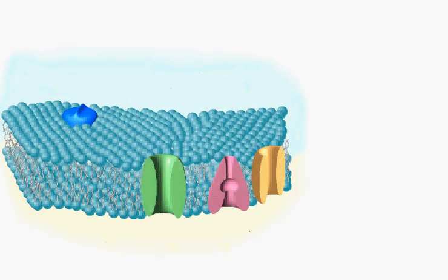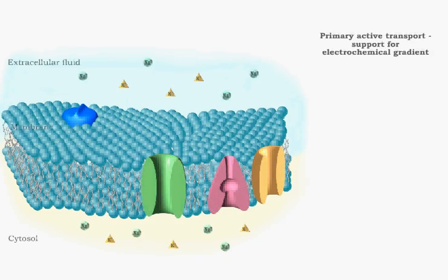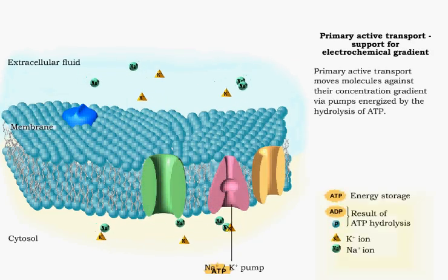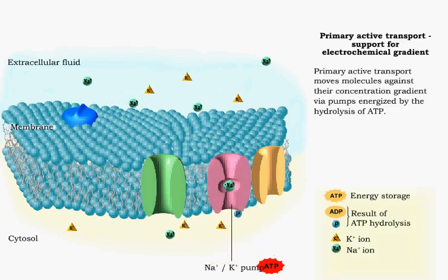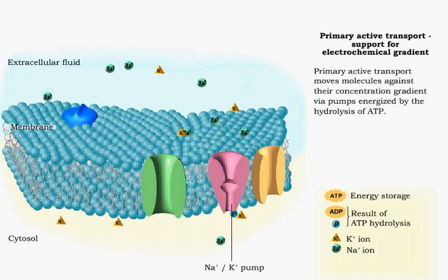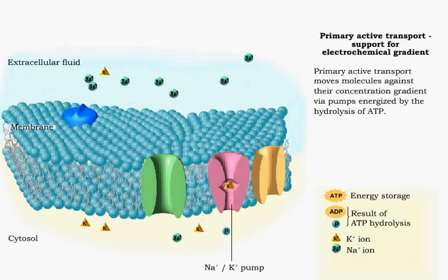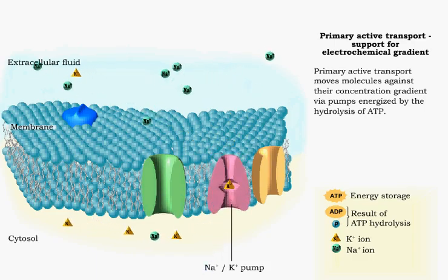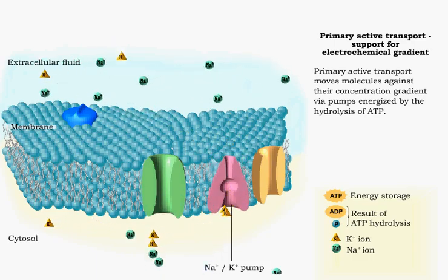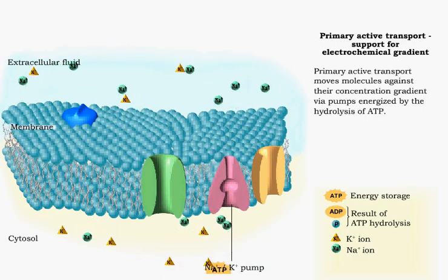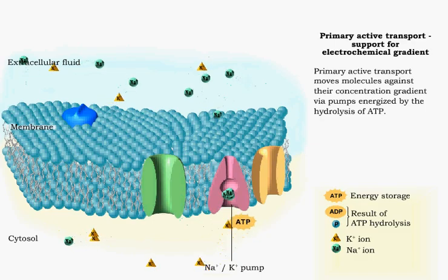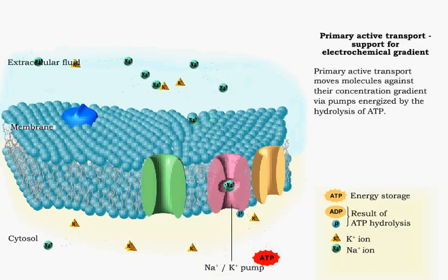Primary active transport of charged or polar solutes requires membrane protein pumps that use energy supplied by the hydrolysis of ATP. This causes a conformational change, moving the molecule up its concentration gradient.